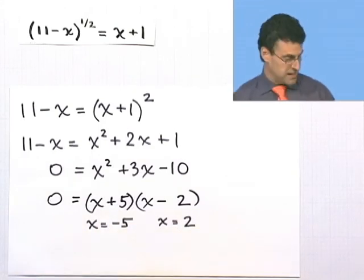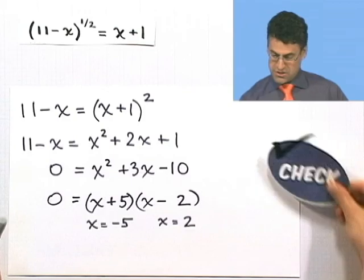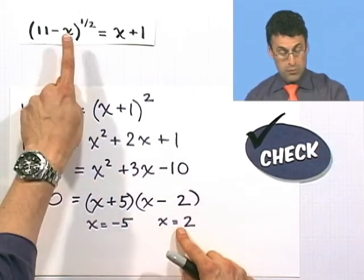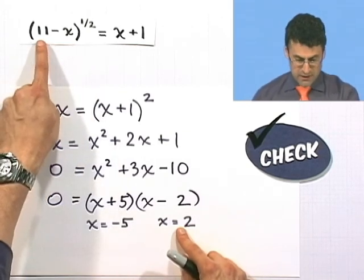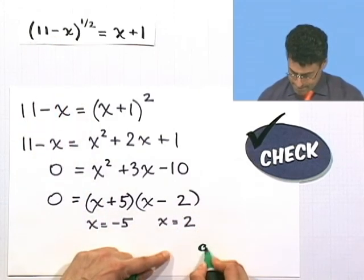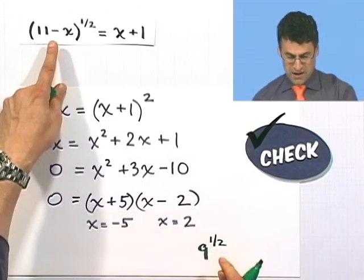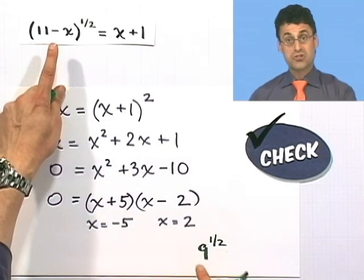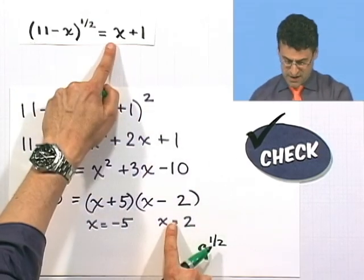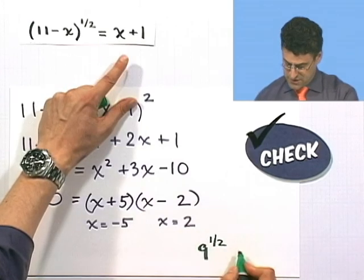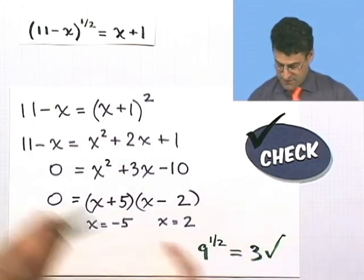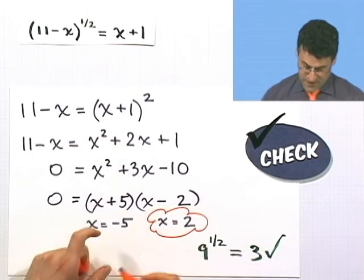Remember, you always have to check. Let's try x equals 2 first by plugging it back into the original equation. 11 minus 2 is 9, so I see 9 to the 1/2 power. The 1/2 power means square root, and the square root of 9 is 3. On the right side, 2 plus 1 equals 3. Notice that 9 to the 1/2 does equal 3 — this checks. So x equals 2 is a valid solution.